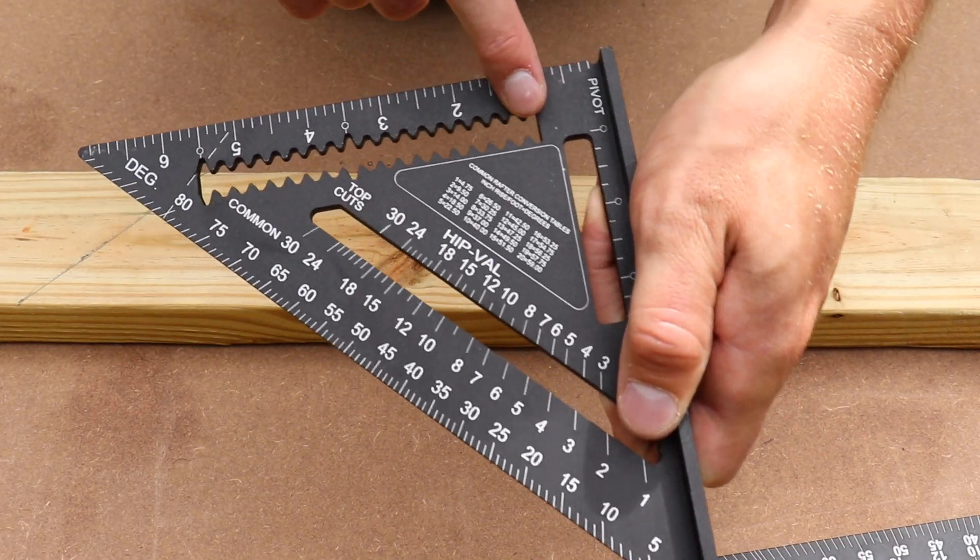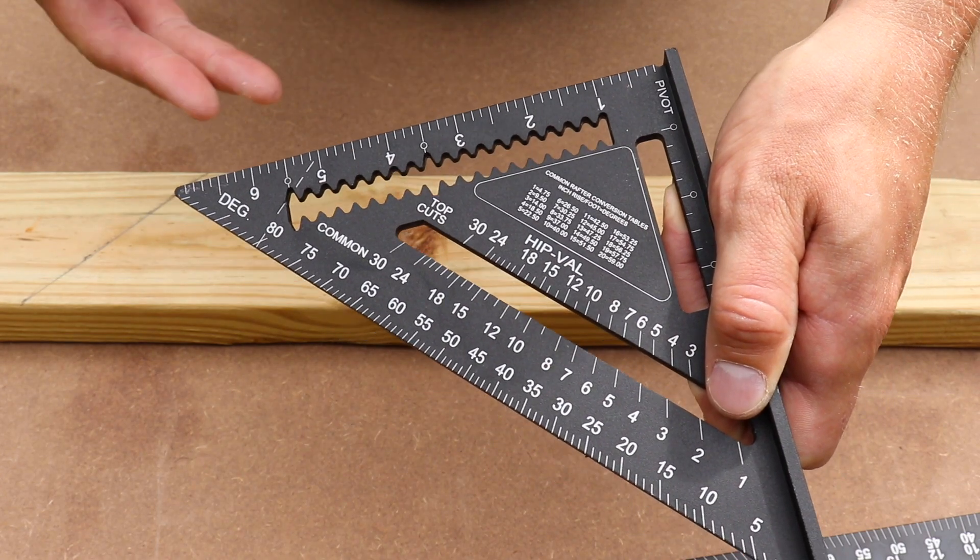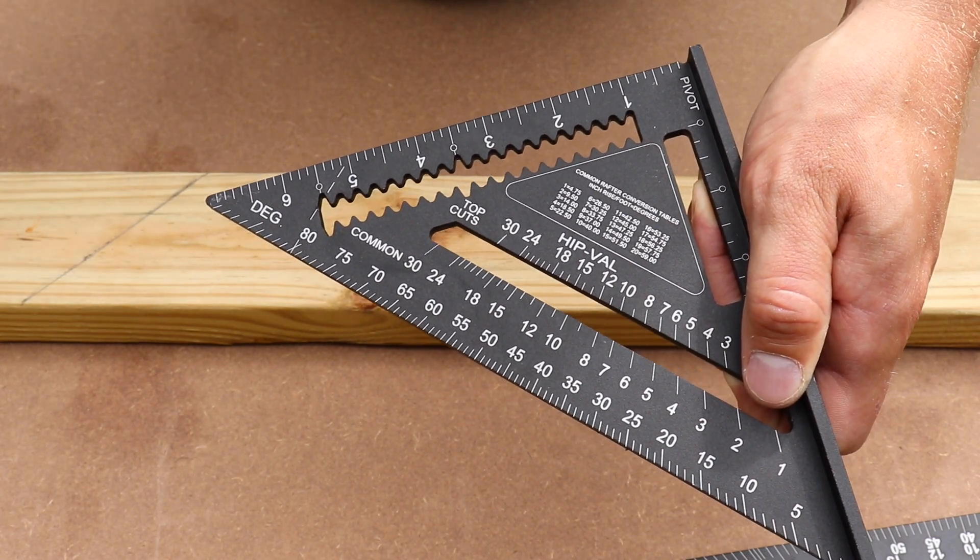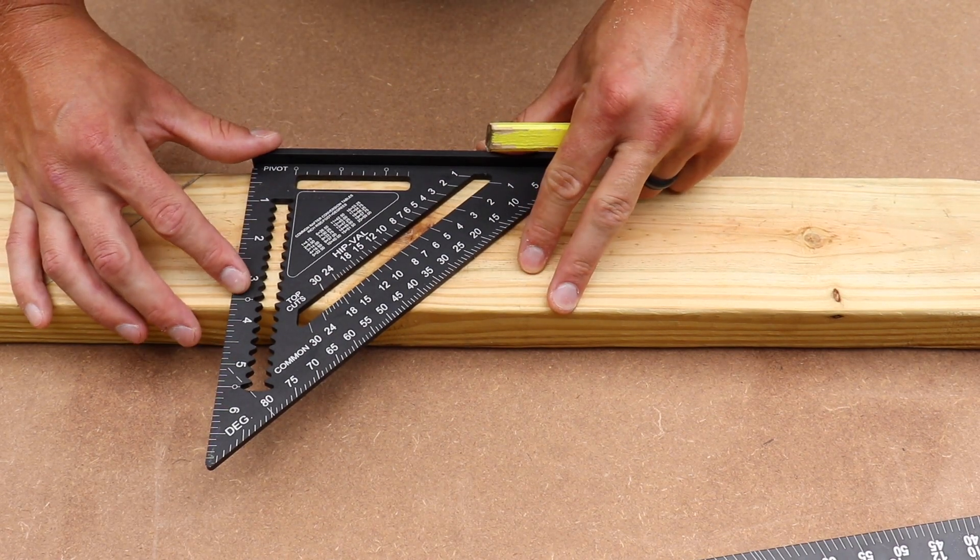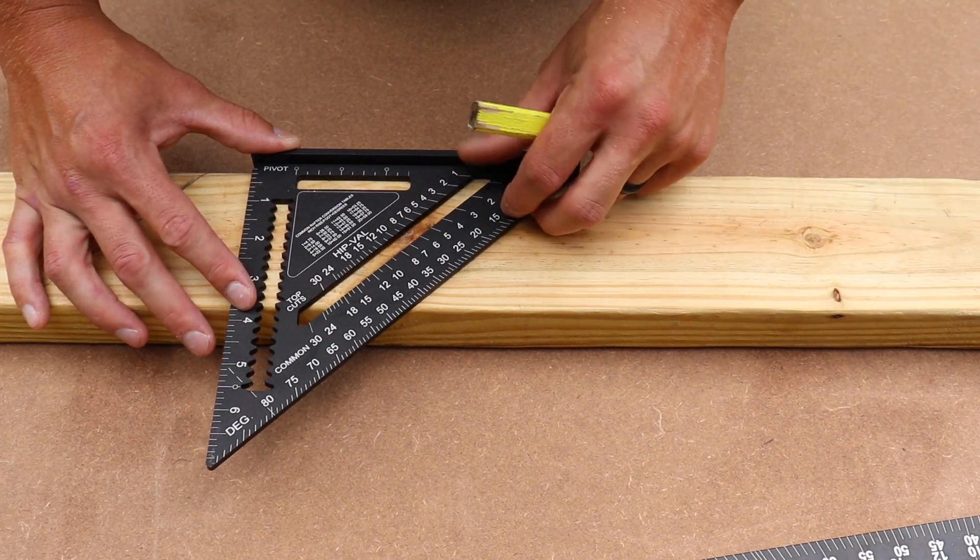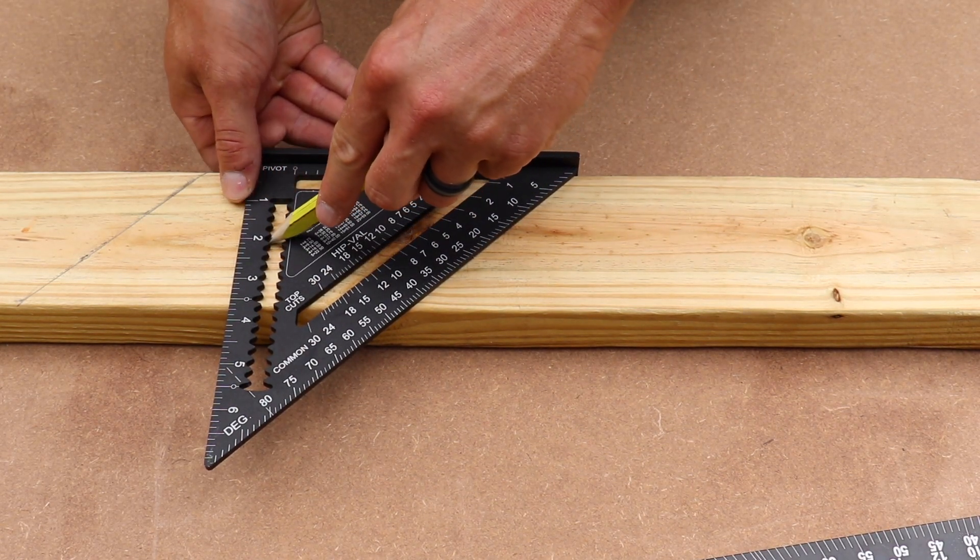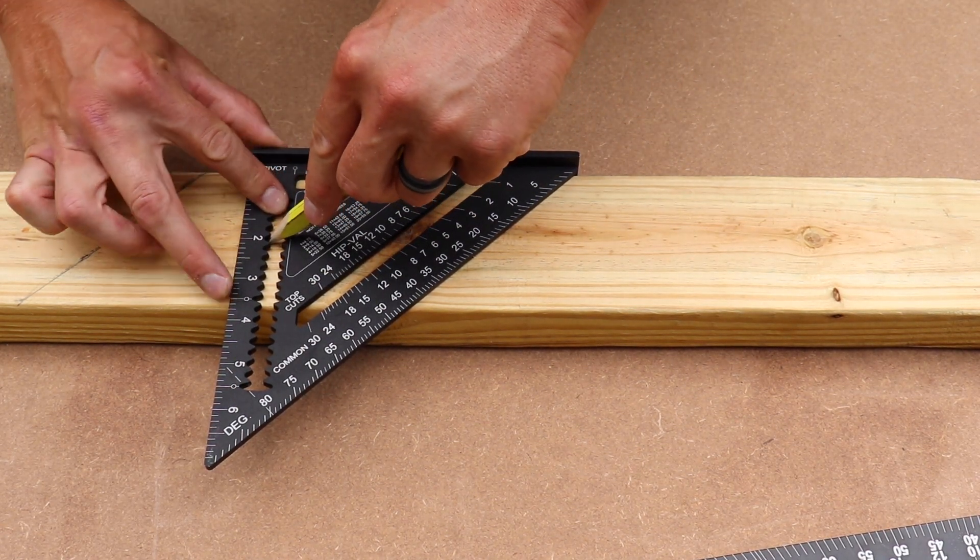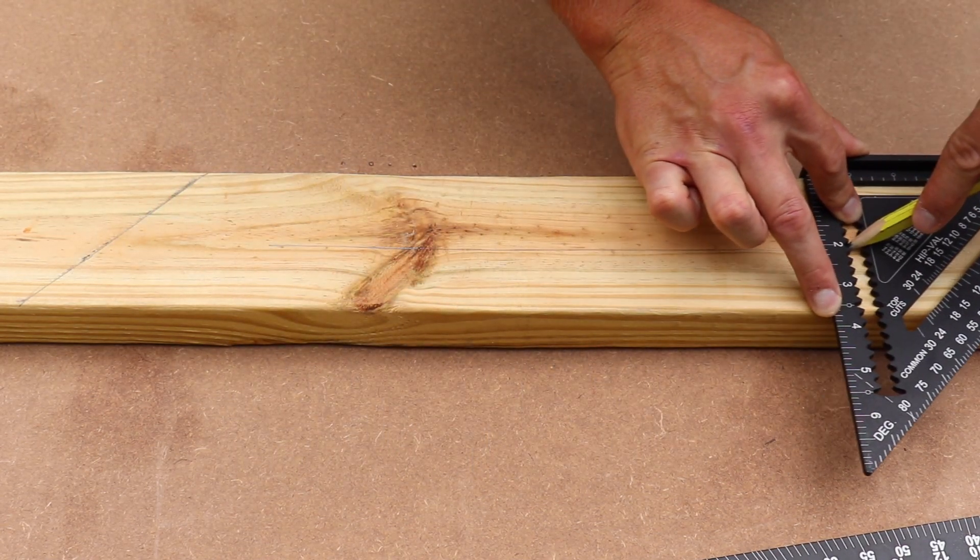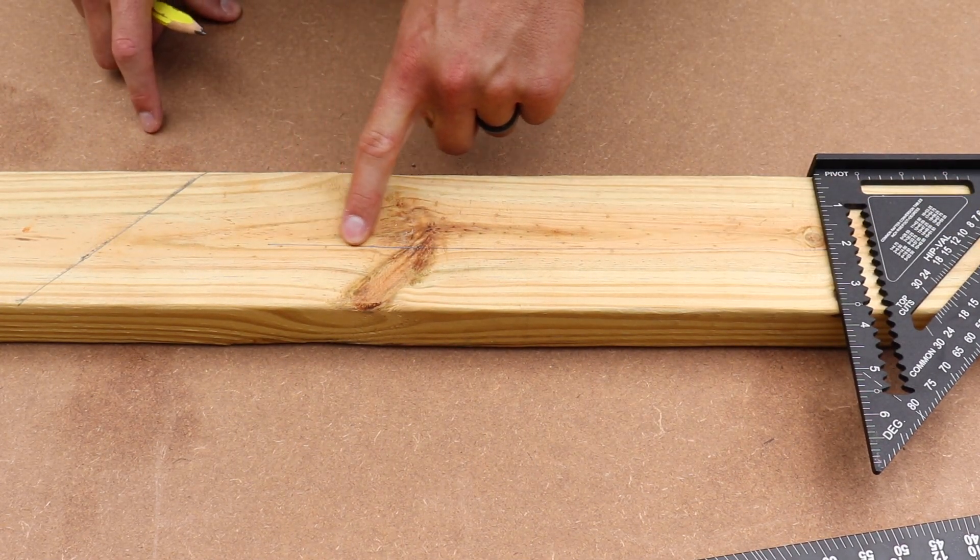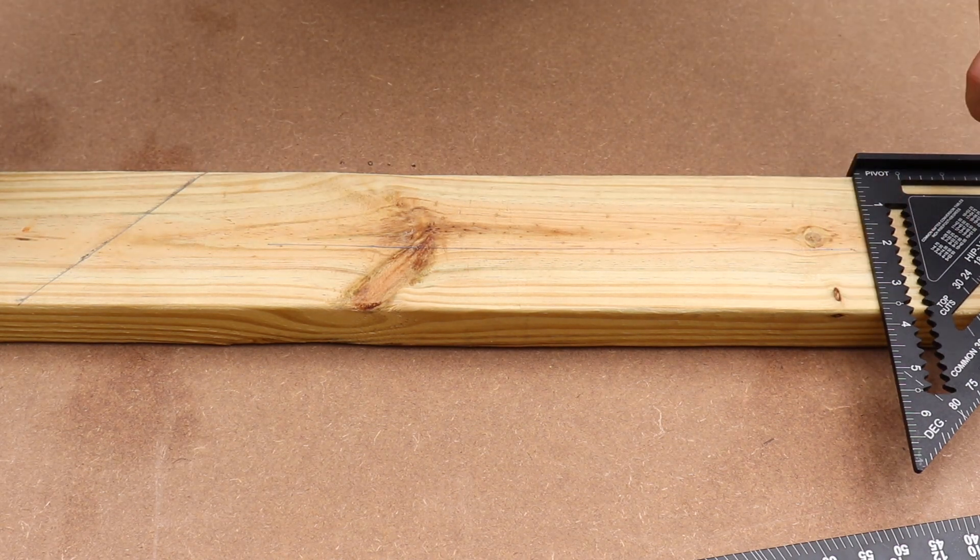Now, this part of your speed square is called a scribe bar and it's used for making scribe lines across whatever material you're working with. So let's say you've got this 2x4 here and you need to rip it down to 2 inches. All you have to do is take your pencil, put it in this notch right here for 2 inches and you can slide your speed square down the entire length of the board and you're going to have a perfect 2-inch mark all the way down the length of your 2x4.